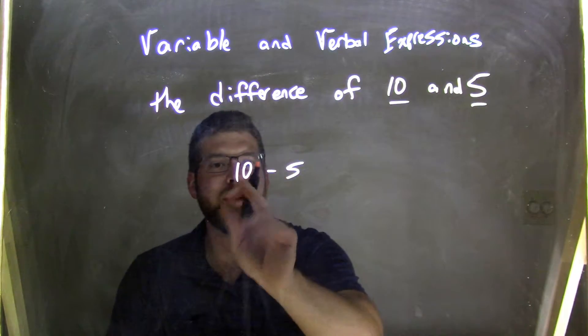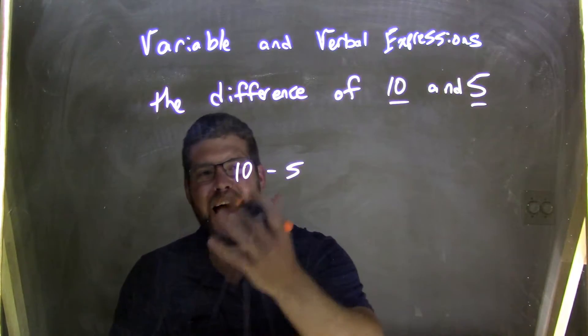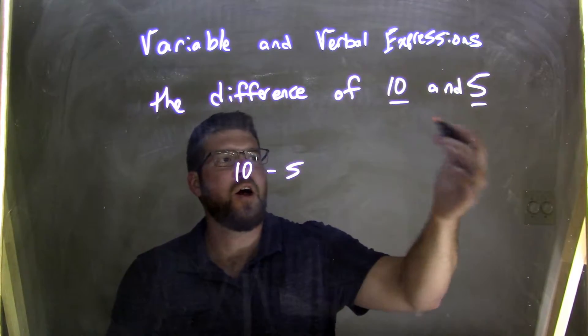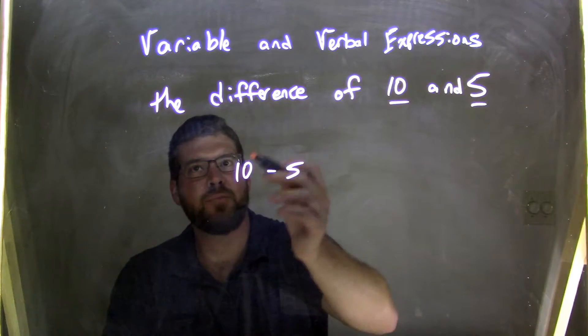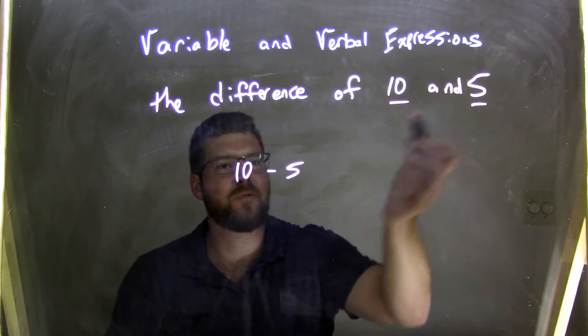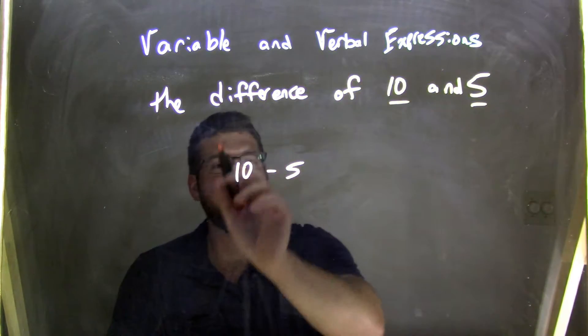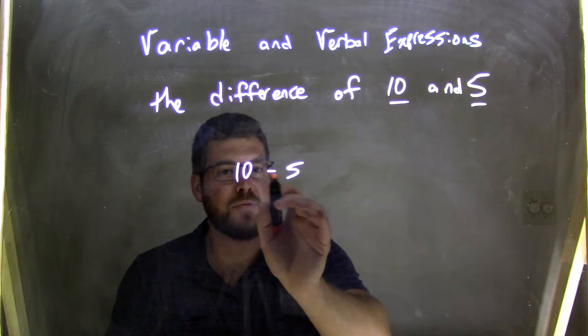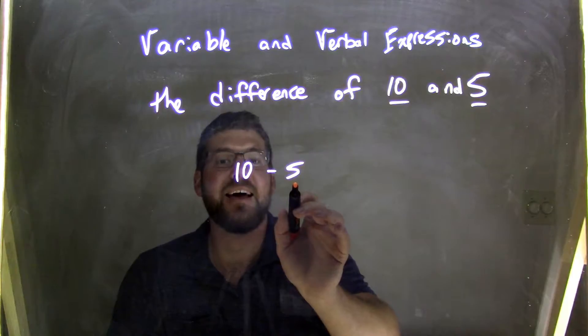So this expression here will give us the difference between 10 and 5. So by taking the words here, we can rewrite that into this expression. Variable and verbal expressions written here as the difference of 10 and 5, difference meaning the subtraction of 10 and 5.